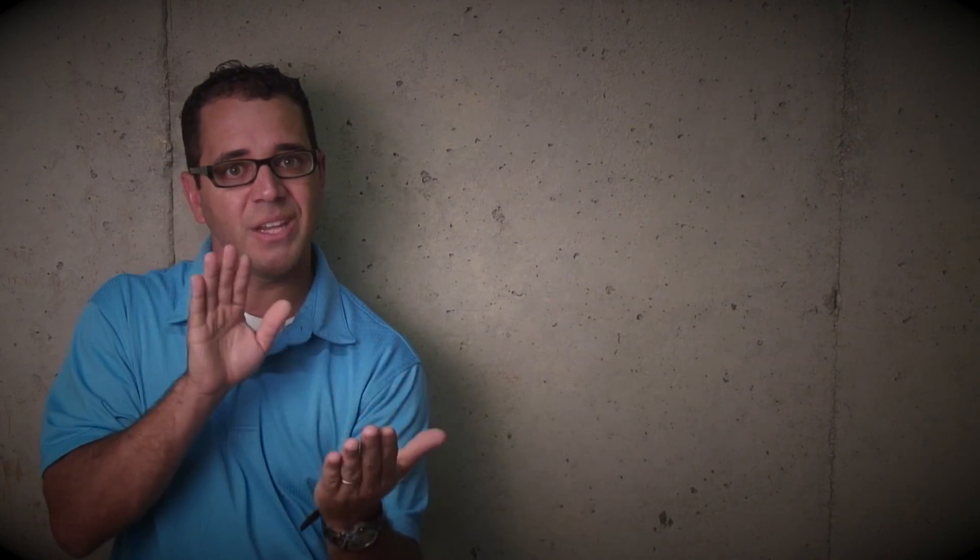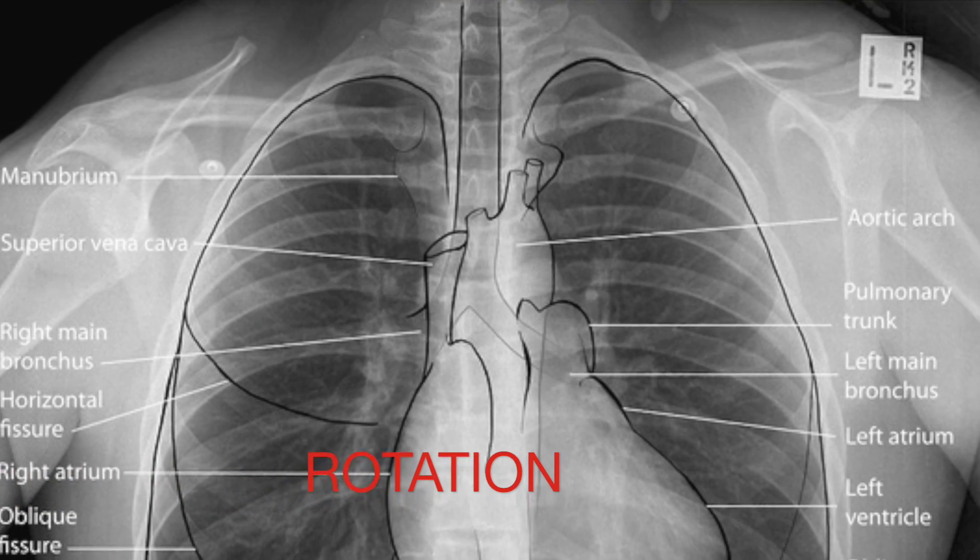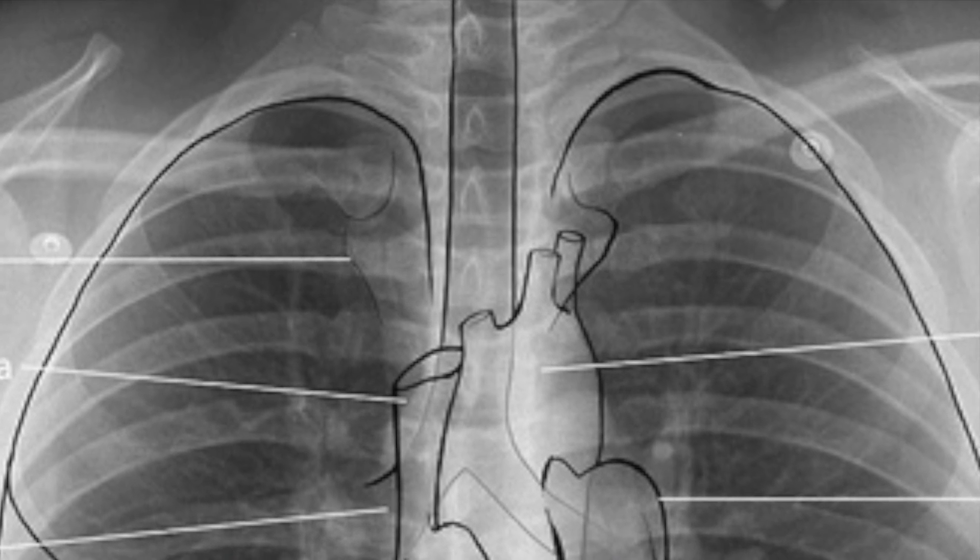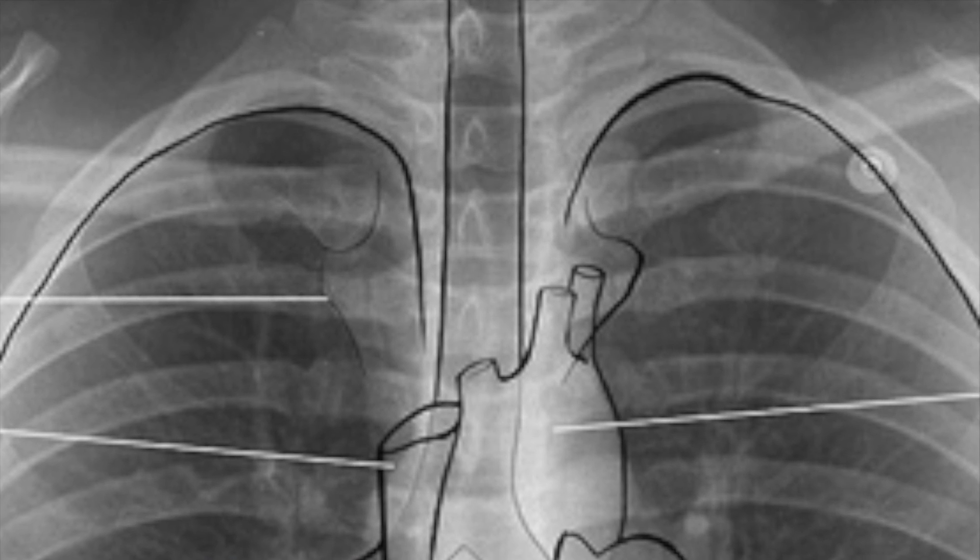Number 2, the rotation. The center point between the medial clavicular heads should align with the spinous process of the spine.